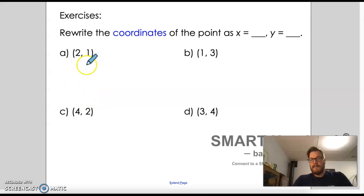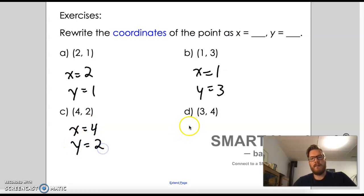And so the x-coordinate, x is going to equal four, and y is going to equal three. And so there are some coordinates here. These are ordered pairs, and it says to rewrite them as x equals and y equals. So in this case, x is going to equal two, and y will equal one. Over here, x equals one, y equals three. Over here, x equals four, y equals two. And over here, x equals three, and y equals four.